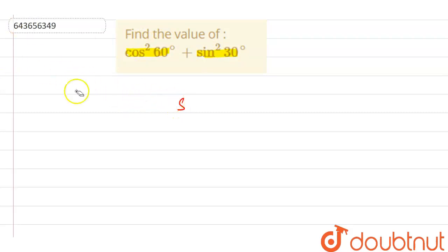Let me write here first cos square. We can write it as cos of 60 degree whole square plus sine of 30 degree whole square.